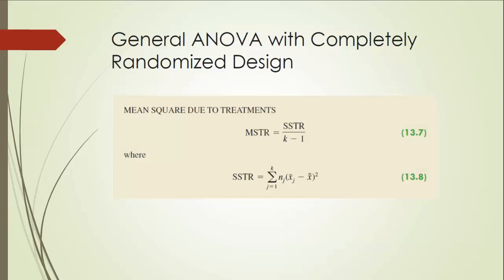To conduct ANOVA analysis, we need MSTR, which is mean square due to treatment. MSTR is equal to SSTR divided by its degree of freedom, where SSTR is the sum of squares due to treatment — representing the squared variation between treatments. This is the formula with which we can compute SSTR.